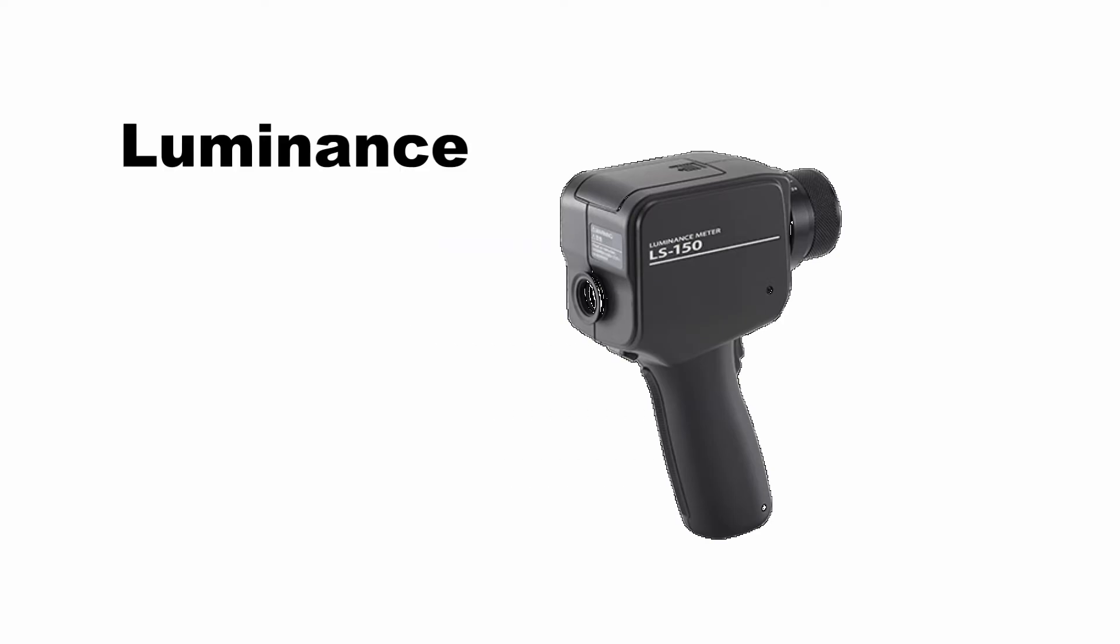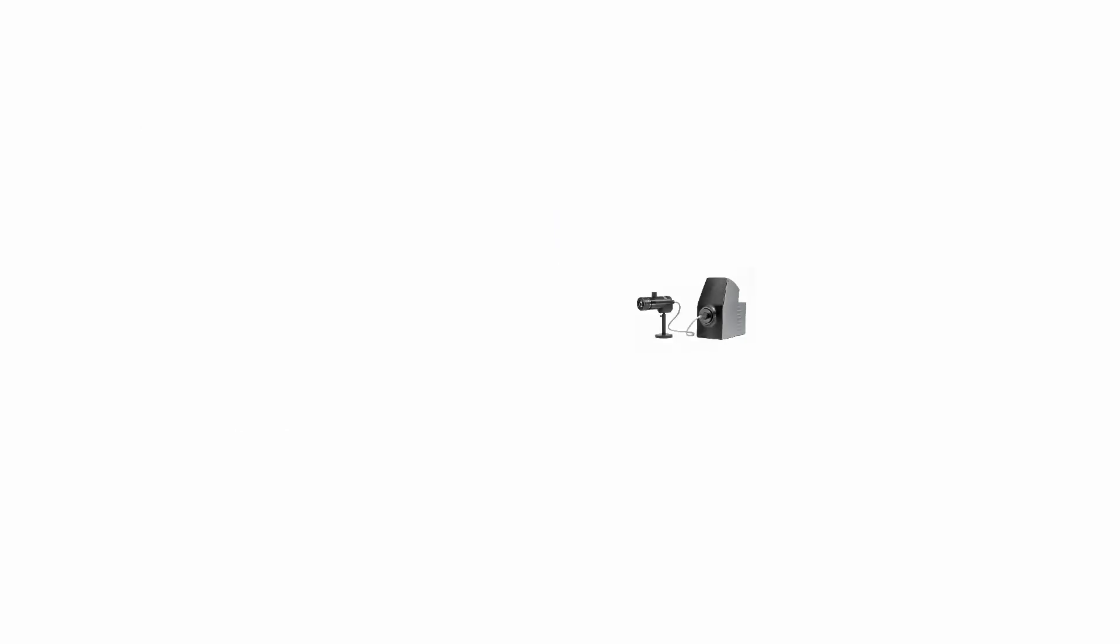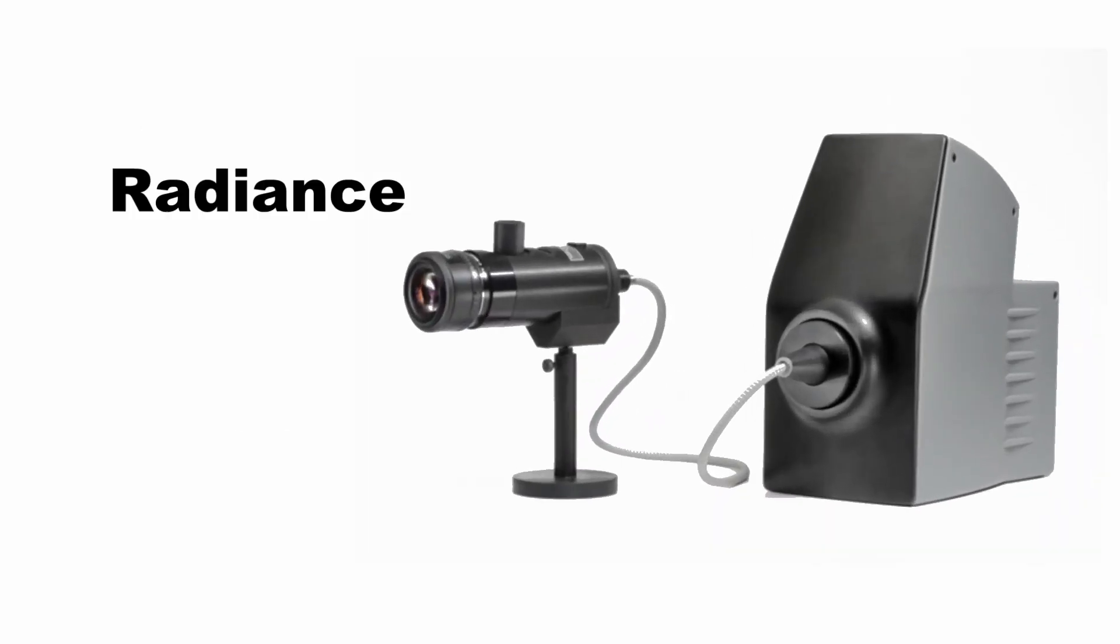Luminance is measured with a luminance meter that is calibrated to the photopic curve. Radiance is normally measured with a spectral radiometer, which gives the radiance as a function of wavelength. The final measurement is the integral of the spectral measurements.